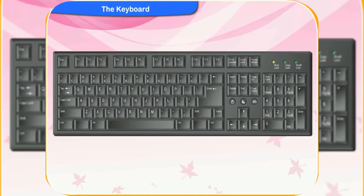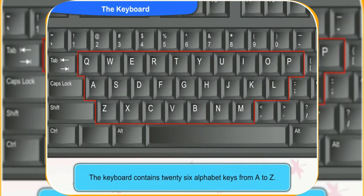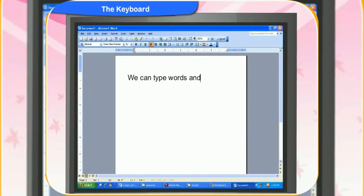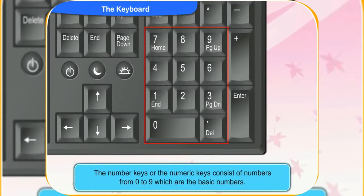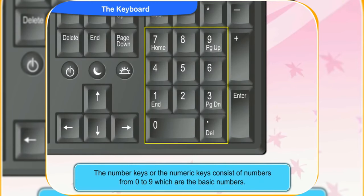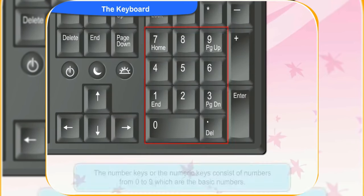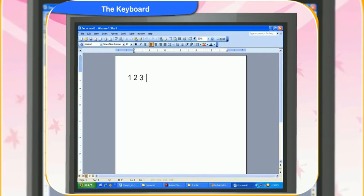I can see alphabets and numbers on the keyboard. The keyboard contains 26 alphabet keys from A to Z. We can type words and sentences in the computer using the alphabet keys. The number keys are also called the numeric keys. It consists of numbers from 0 to 9, which are the basic numbers. The numeric keys are used for typing numbers.